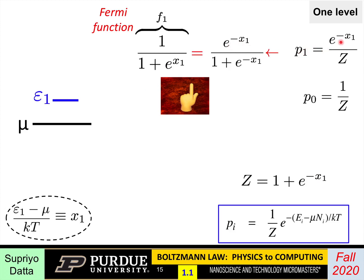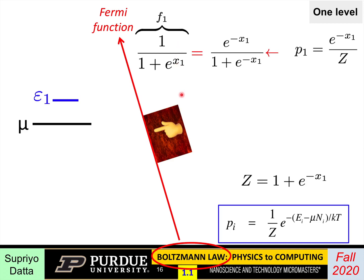Substituting back, p_1 equals e to the power minus x_1 divided by (one plus e to the power minus x_1). Multiplying numerator and denominator by e to the power plus x_1 gives the form you'll recognize as the Fermi function stated before. So starting from Boltzmann's law and applying it to this simple one-level system, we obtain the Fermi function.